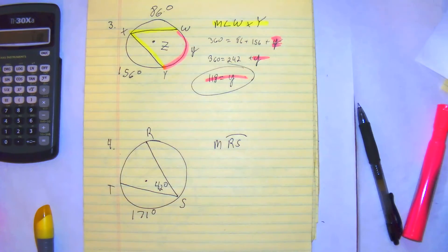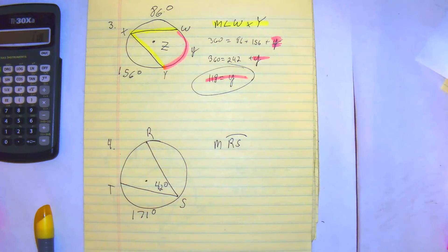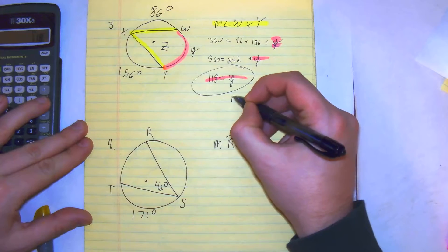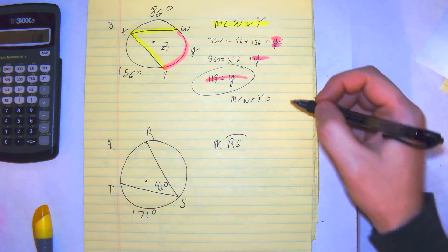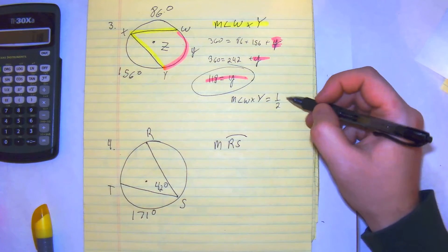And that's significant here because now we can find the measure of wxy. Again, we want to find the measure of wxy. So we're going to use this formula: measure of wxy is equal to one half of the arc, which is wy.